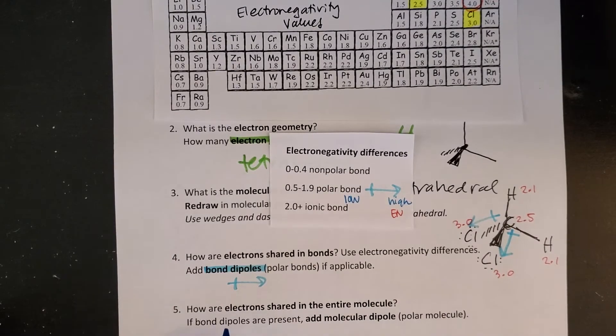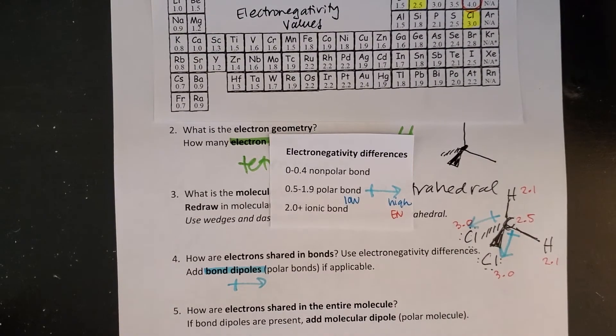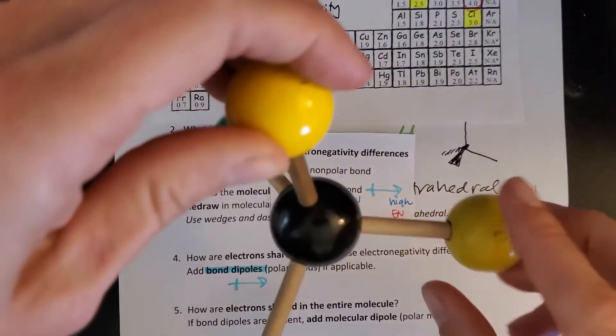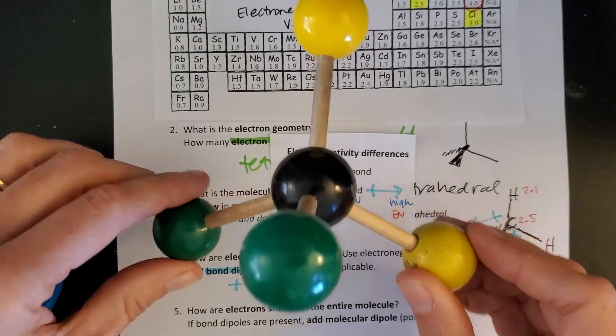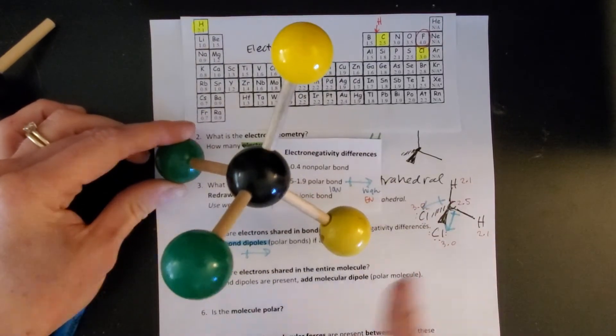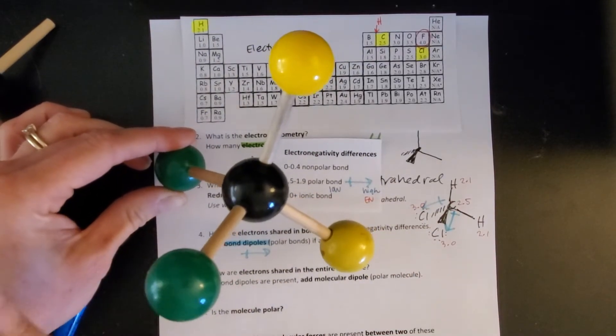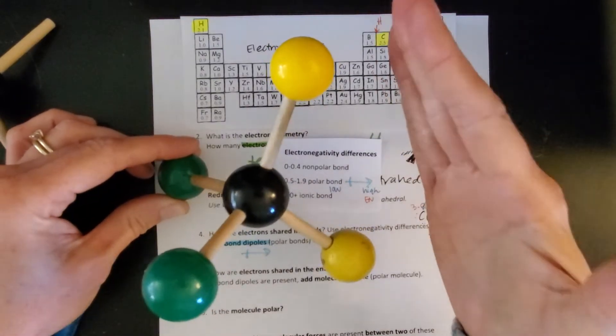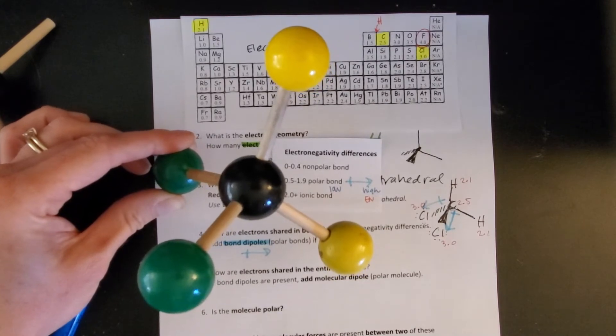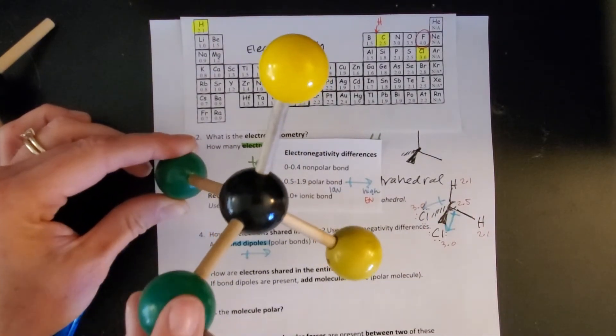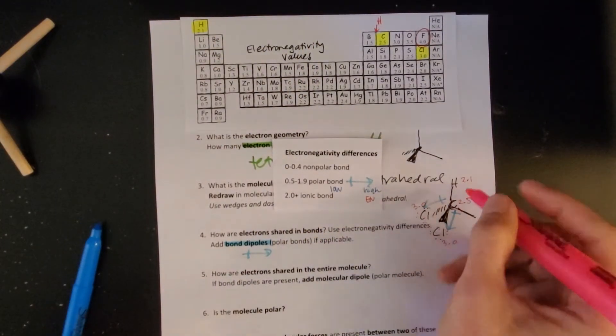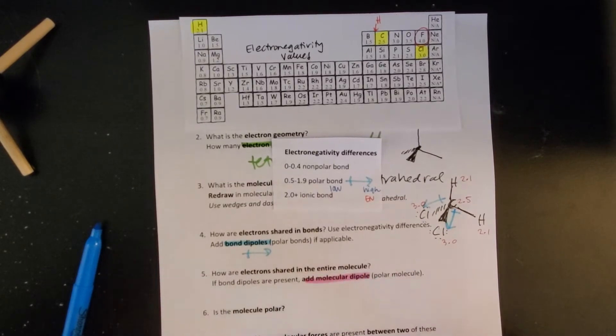Next, how are electrons shared in the whole molecule? Looking at the entire molecule, are electrons inclined to hang out on one side? Where the two chlorines work together I can see electrons getting tugged towards the chlorine side and away from the hydrogen side. We're thinking about sides of the molecule at this point. Electrons are getting tugged towards the chlorine side, and I show that visually by adding a molecular dipole.